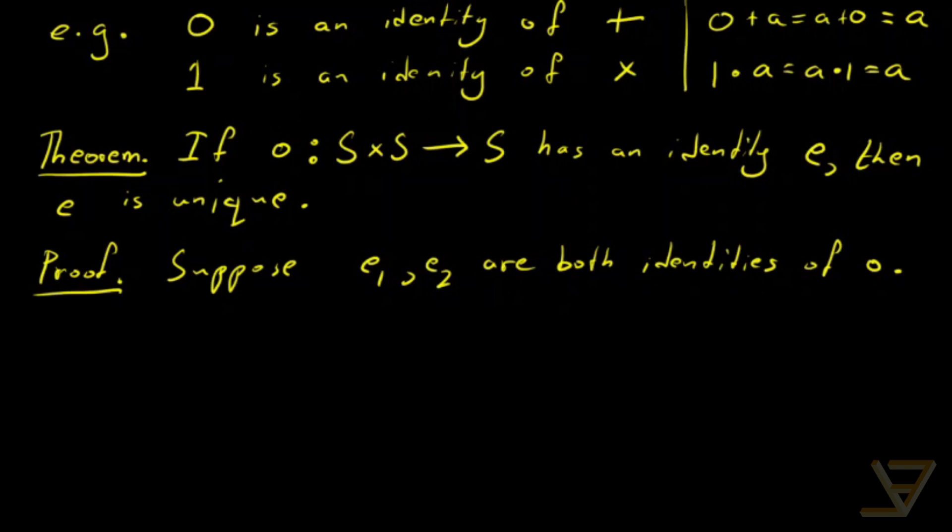What we're going to do first is compose e1 with e2. And because e1 is an identity, we get that this is equal to e2.